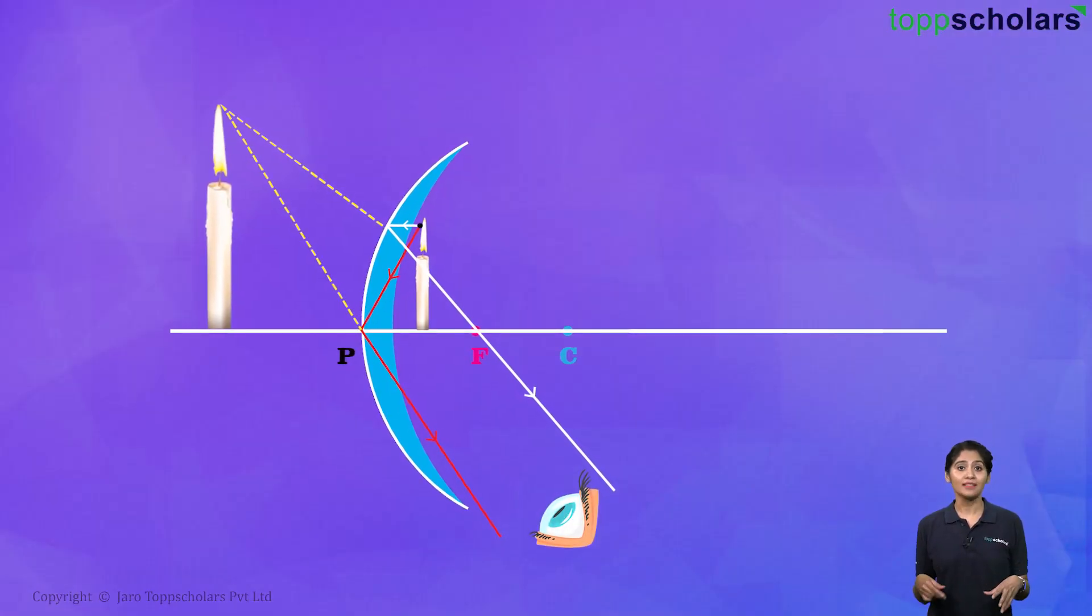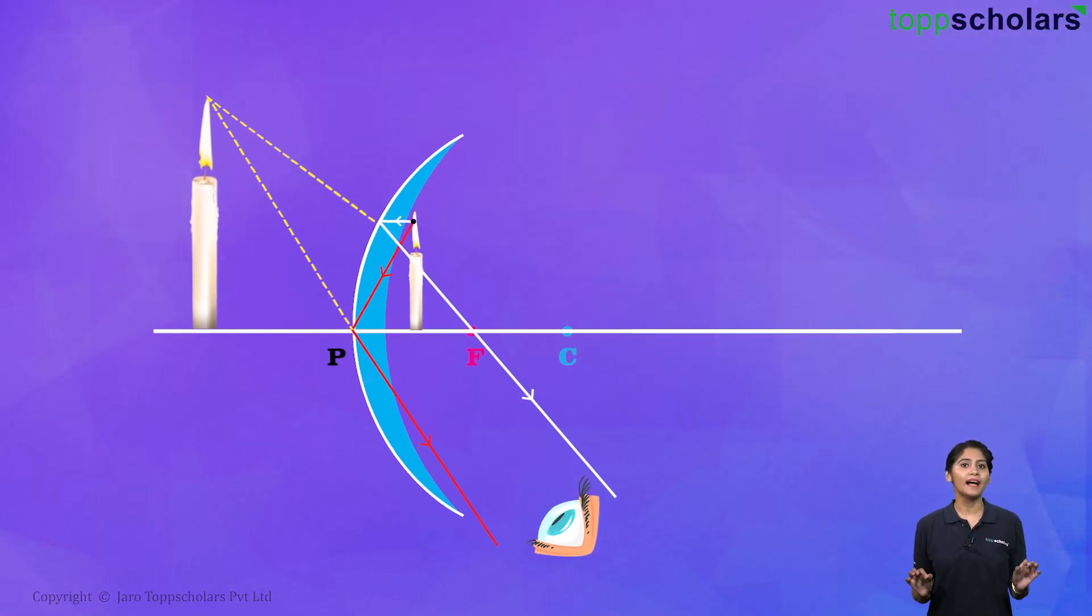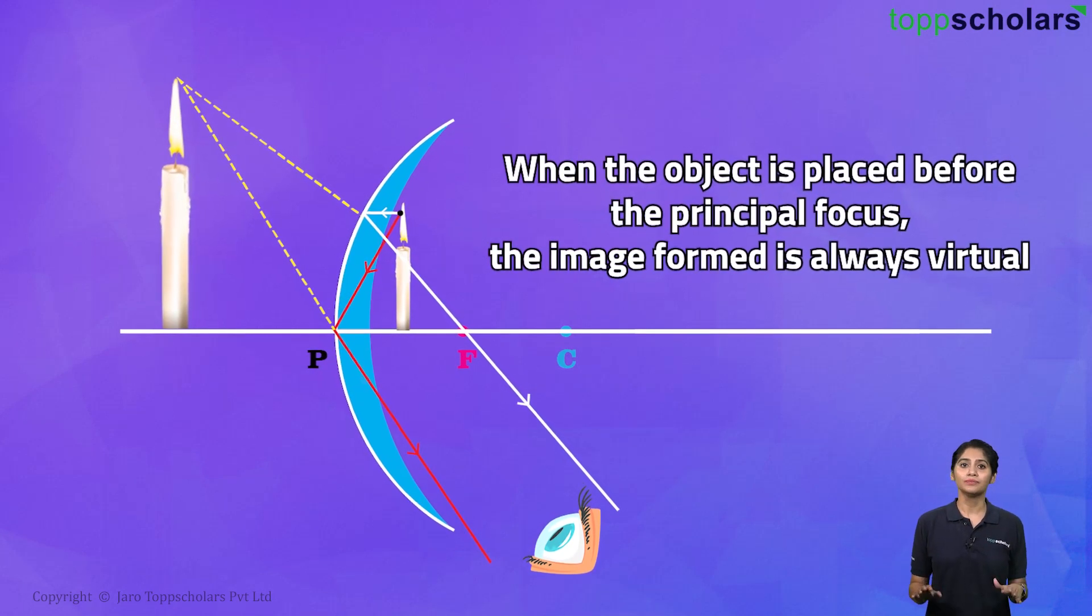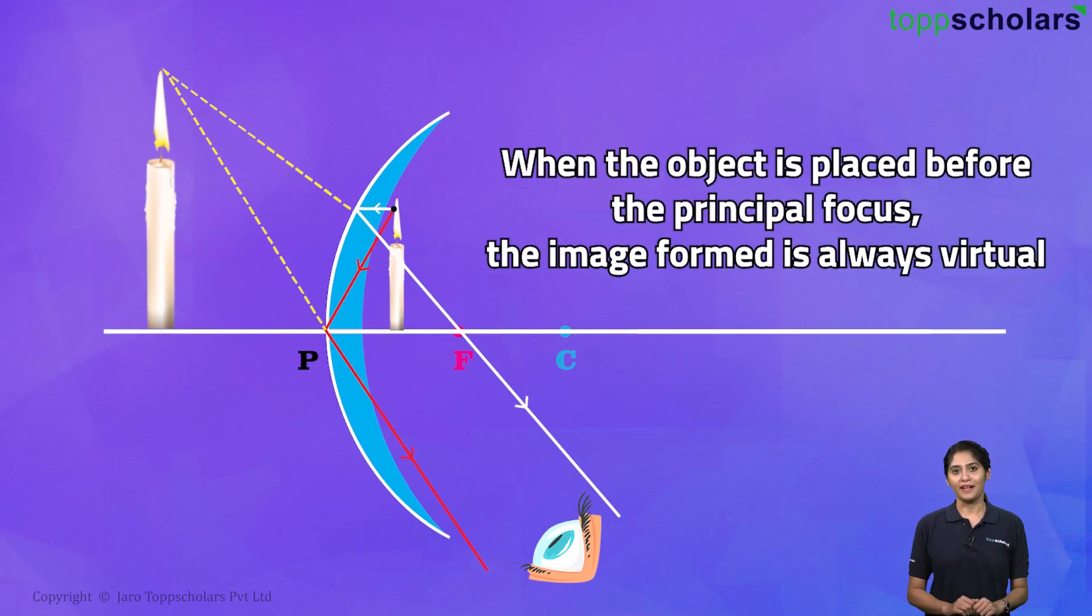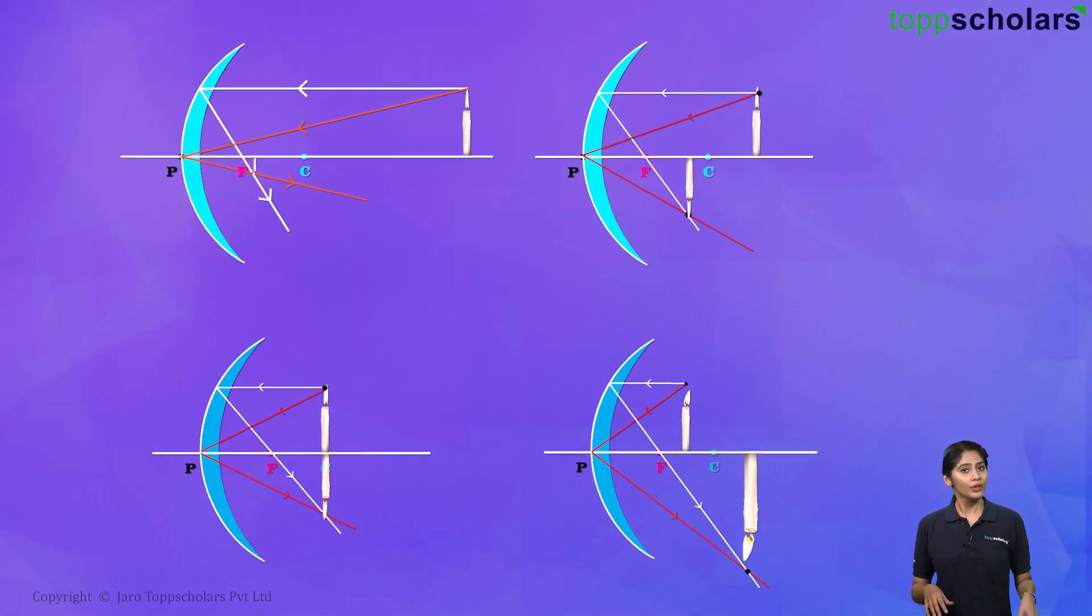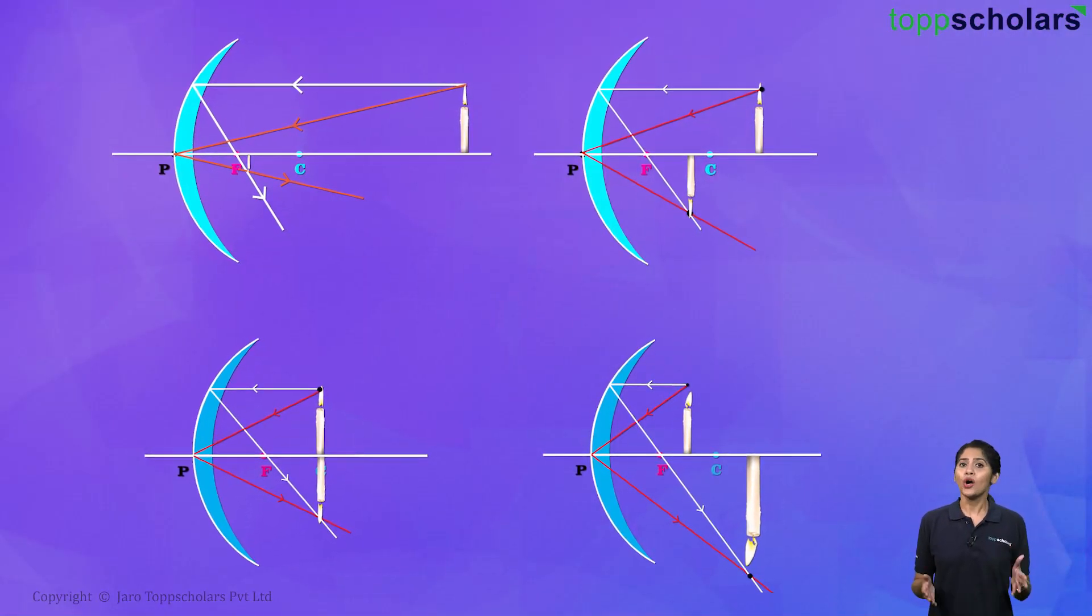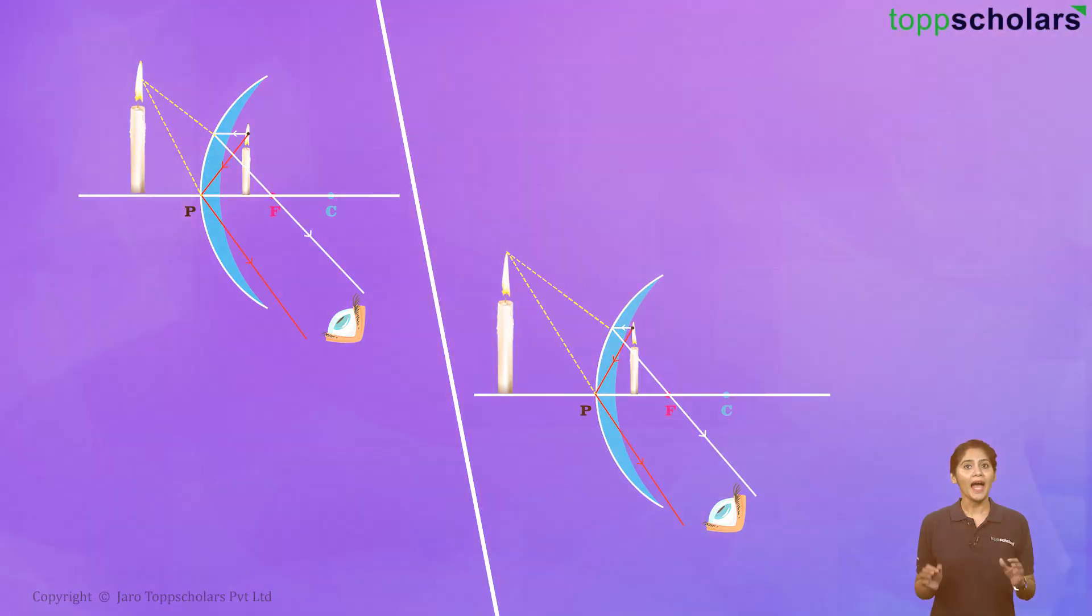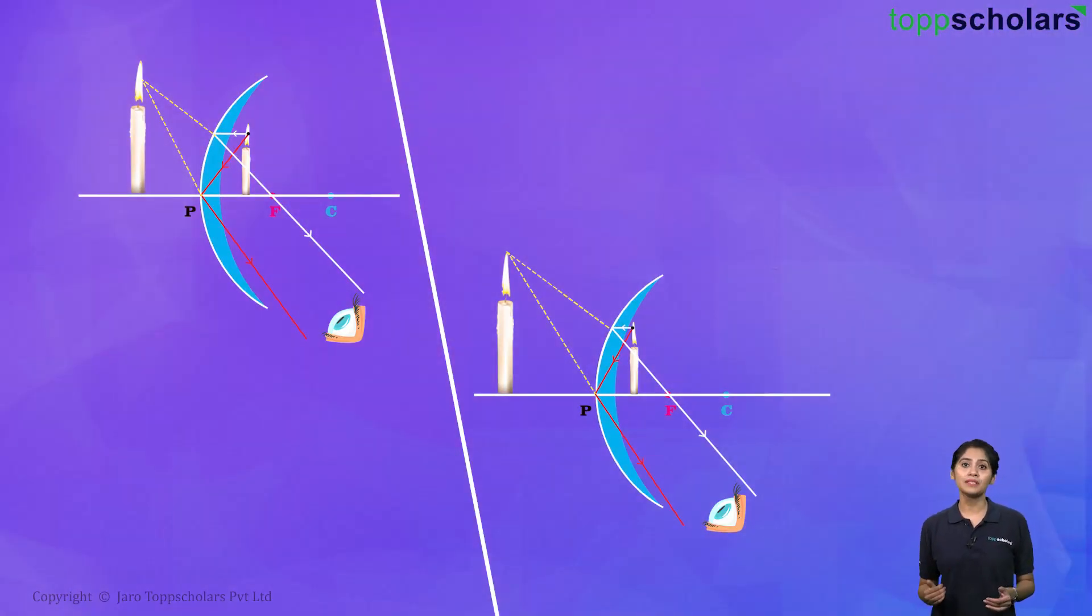As the object gets closer, you will find that the image stays virtual. If it comes even closer, the image will be less magnified. So for concave mirrors, as long as the object is beyond the principal focus, the image will be real. And if the object is before the principal focus, its image is virtual.